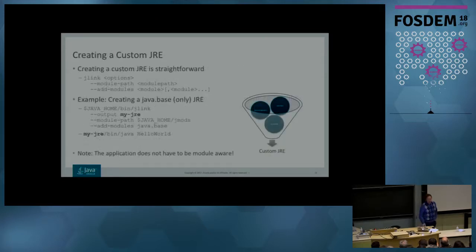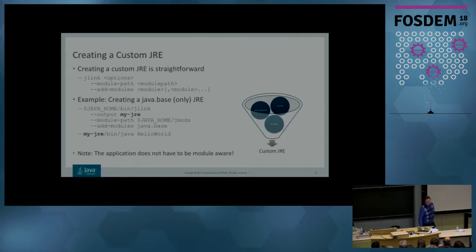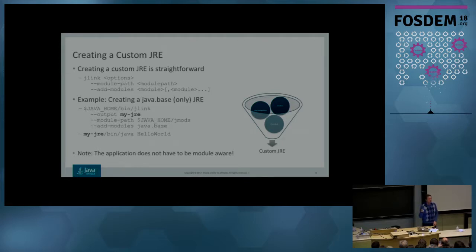Creating a custom JRE is very straightforward using the J-Link tool. You give it a few options — the example shows creating a JRE with only the java.base module, outputting it to the directory my-jre, picking up modules from the JDK, and including only java.base. A few microseconds later, you have a tailor-made JRE you can run Hello World with. It should be noted that your application — Hello World, Tomcat, or whatever — does not need to be modularized to use this. You can do it even for older Java applications before modularizing.